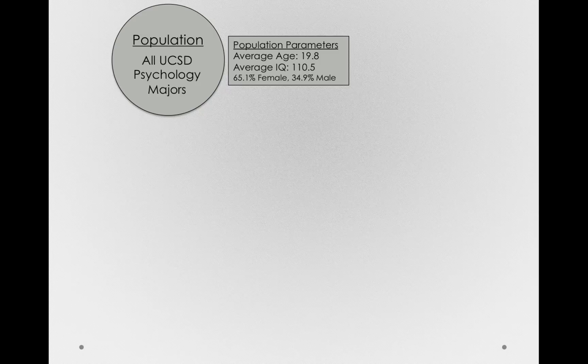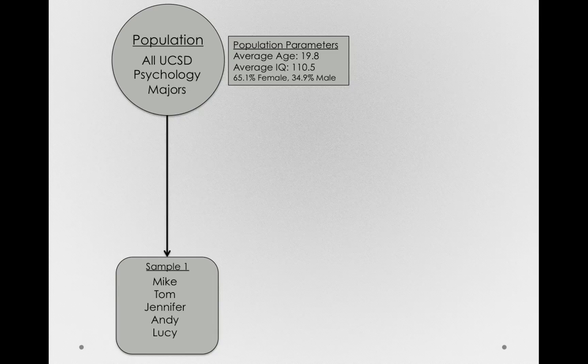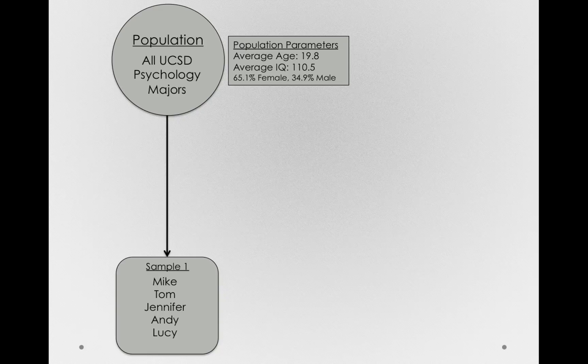Now imagine we take a sample from this population, the first sample, with Mike, Tom, Jennifer, Andy, and Lucy. So these are just five individuals from the entire population from all UCSD psychology majors.